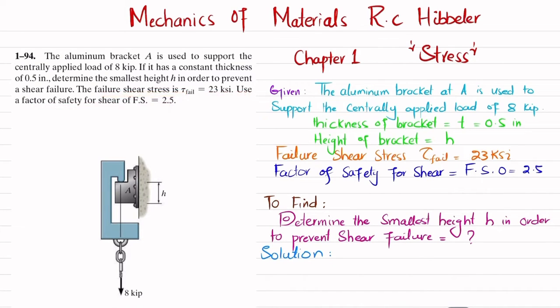So you can see this is bracket A, aluminum bracket A, and this is applied by axially load of 8 kips. The thickness of this bracket is 0.5 inch and this height is h. So you have to find the minimum height h in order to prevent the failure.